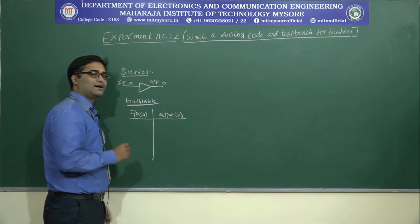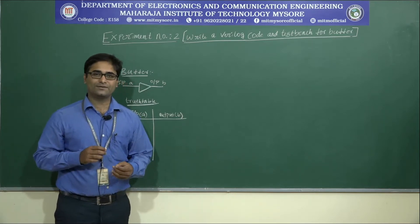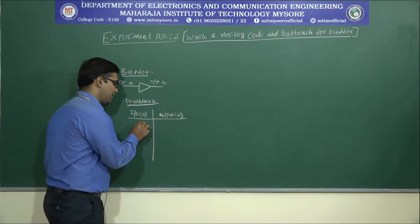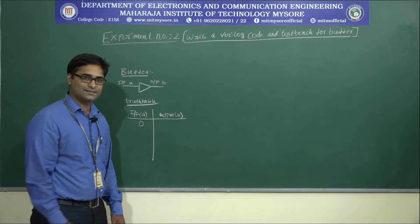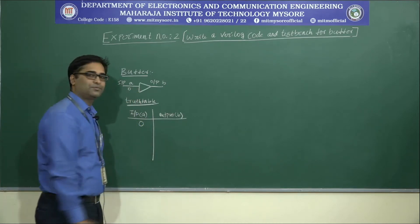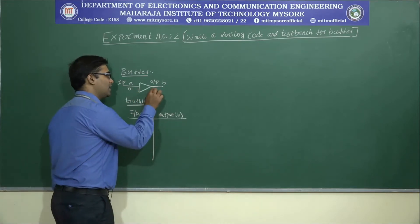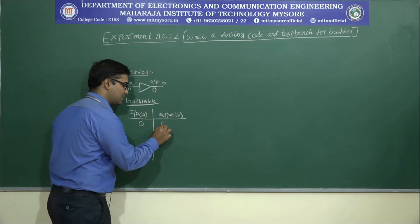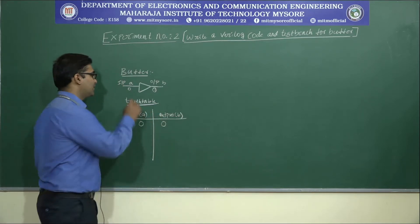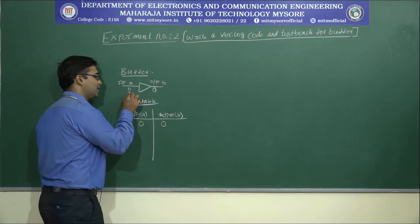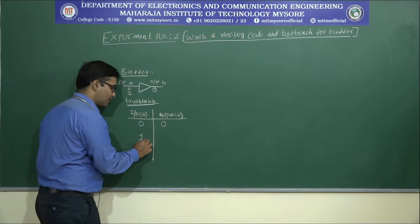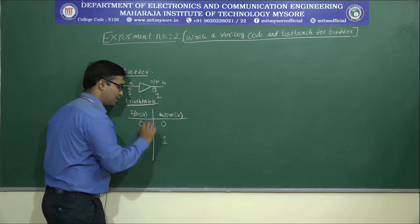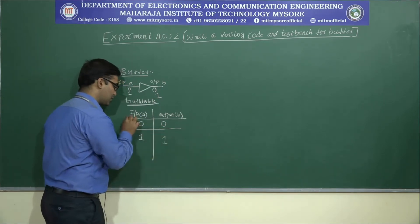Let us define the truth table with respect to digital values in terms of 0 and 1. If the input is 0, then the output is 0. If the input is 1, then the output is 1.